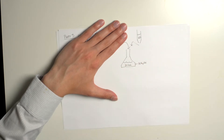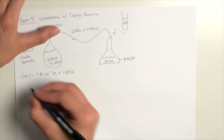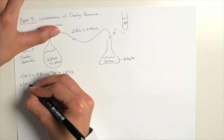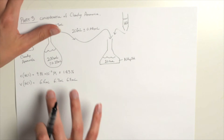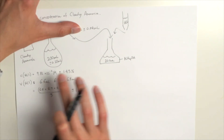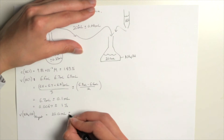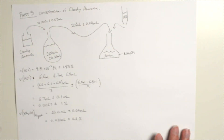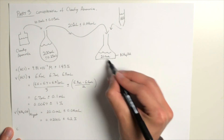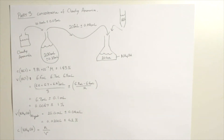A good starting point is to write down all the numbers and figures that we know. We knew the concentration of the hydrochloric acid and the volume of hydrochloric acid from our titer measurements — we had values of 6.6. We need to take an average; the range is defined as the difference between the largest and smallest value. We also know the volume of ammonium hydroxide inside the conical flask, but we don't know its concentration.